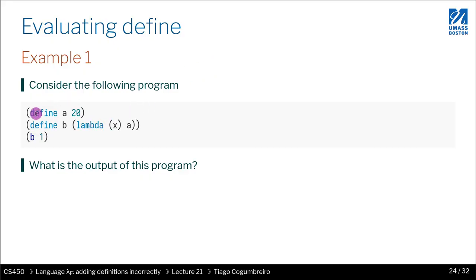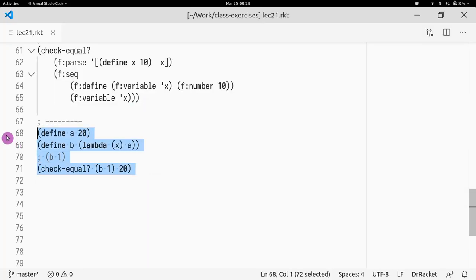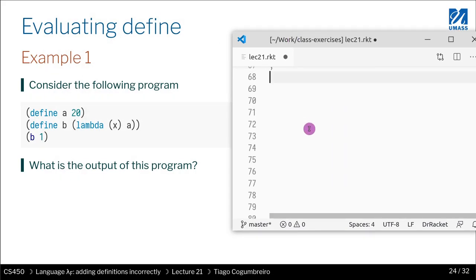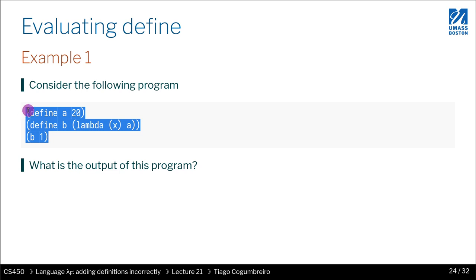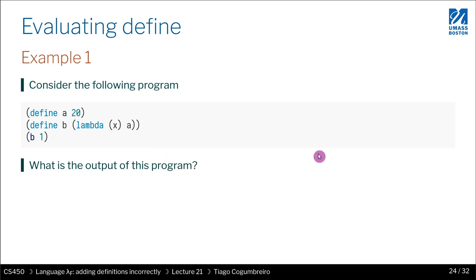In our first example, we define a variable `a` and assign 20 to it. Then we create a function `b` that expects a parameter and returns `a`, so it returns 20. Whatever argument I pass to `b`, I should always get the number 20 back, because I'm returning `a` and `a` remains unchanged. If I run this program I get the number 20 — nothing too surprising.